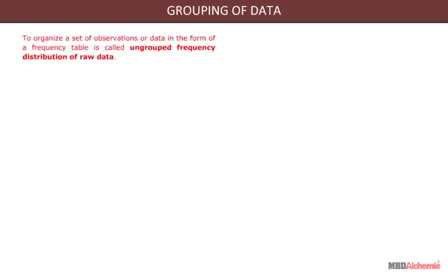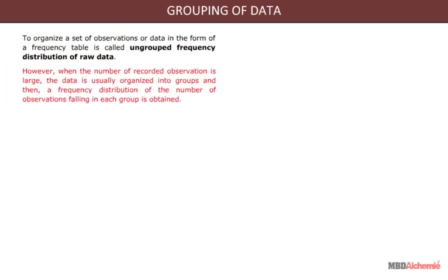To organize a set of observations or data in the form of a frequency table is called ungrouped frequency distribution of raw data. However, when the number of recorded observations is large, the data is usually organized into groups, and then a frequency distribution of the number of observations falling in each group is obtained.